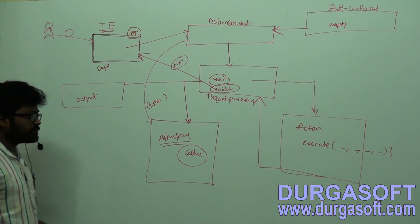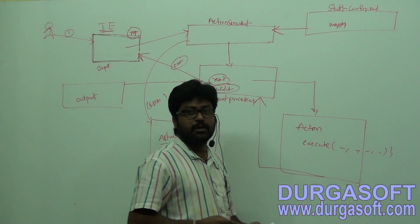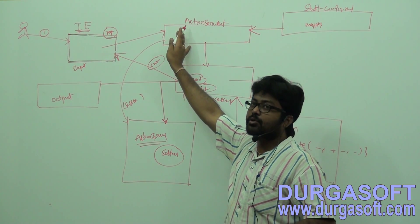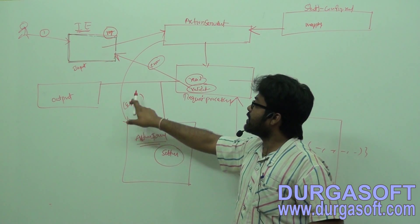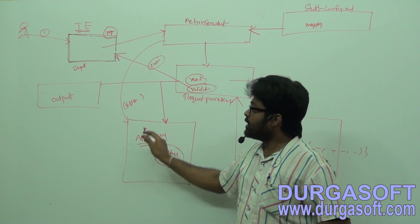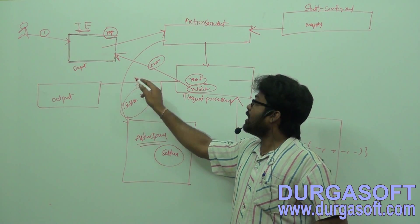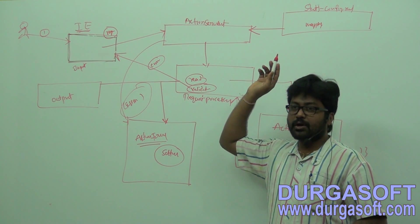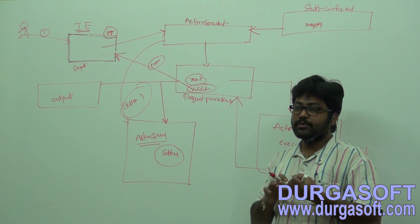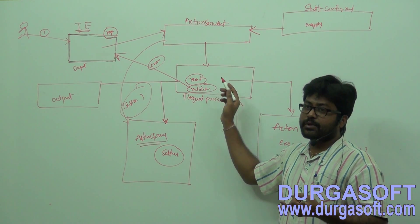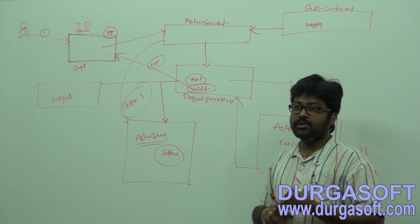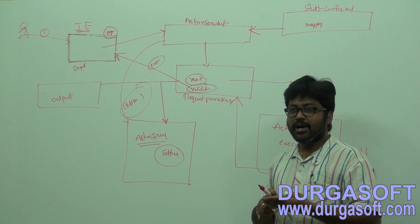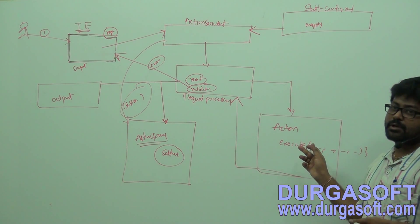We know the internal architecture flow - internally how the flow is going on. Whenever we submit a request, it will come to doGet or doPost. doGet or doPost will redirect it to the process method. The process method will create one object of your form bean and store it into session scope. After that it will submit request to RequestProcessor. RequestProcessor will call four methods: process locale method, process pre-process method, process form beans, process validations, and finally process controller.